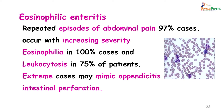Eosinophilic enteritis presents as repeated episodes of abdominal pain in 97% of cases, with severity increasing gradually. Eosinophilia is seen in practically all patients, leukocytosis in about three-fourths of patients. In extreme cases, eosinophilic enteritis may present with signs and symptoms of appendicitis or intestinal perforation.